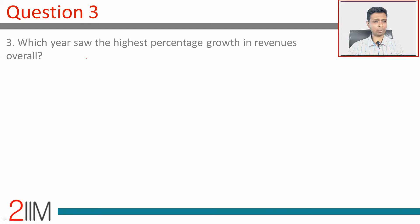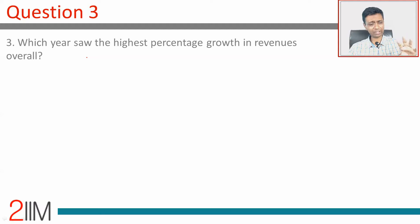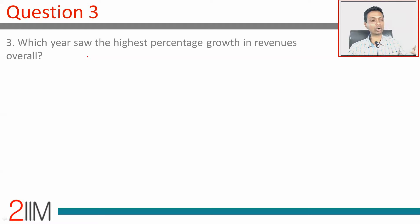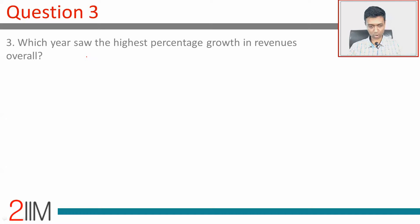This is DA practice on line graphs. We are going to look at question number 3. We have already done questions 1 and 2, where we went through the details of what the data presented is. If you have not seen 1 and 2, it is probably worth going through those before coming here. The question is: which years saw the highest percentage growth in revenues overall?